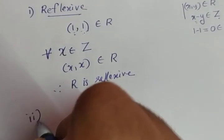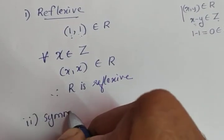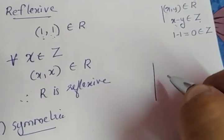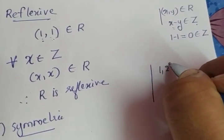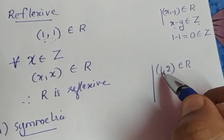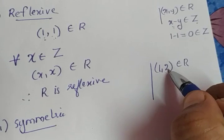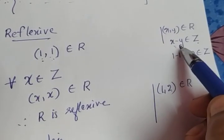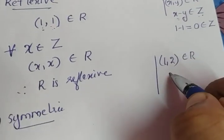Second, prove symmetric. Here also I will take two numbers: (1,2). (1,2) is an element of R because the difference of 1 and 2 is an integer. That is our condition: x minus y is an integer. What about (2,1)?